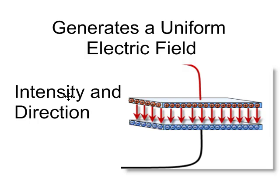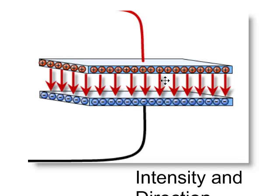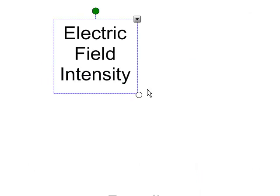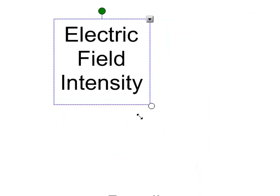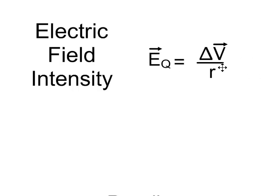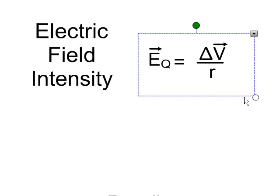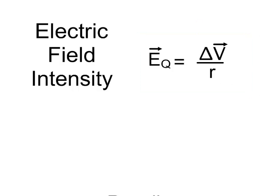That's both in terms of intensity and direction. As I get further away from a positive charge, I approach a negative charge, and so intensity throughout is uniform. Electric field intensity in this case can be calculated if I happen to know what the potential difference is between the two plates — in other words, the voltage either side of the plates — and the separation R of the plates.